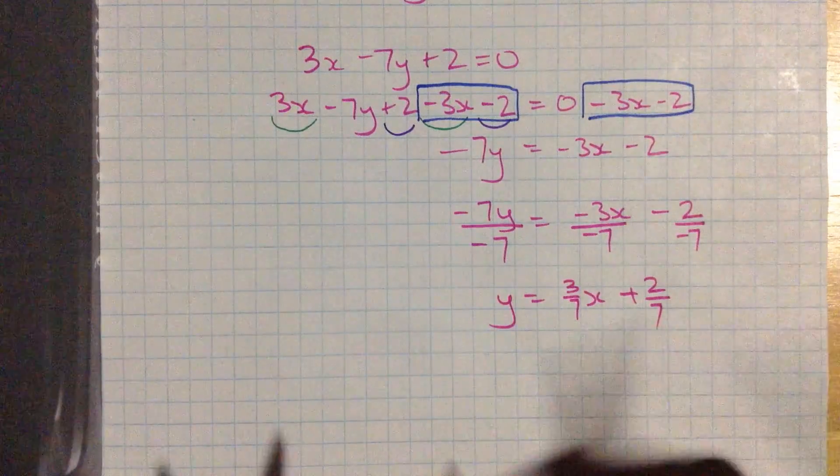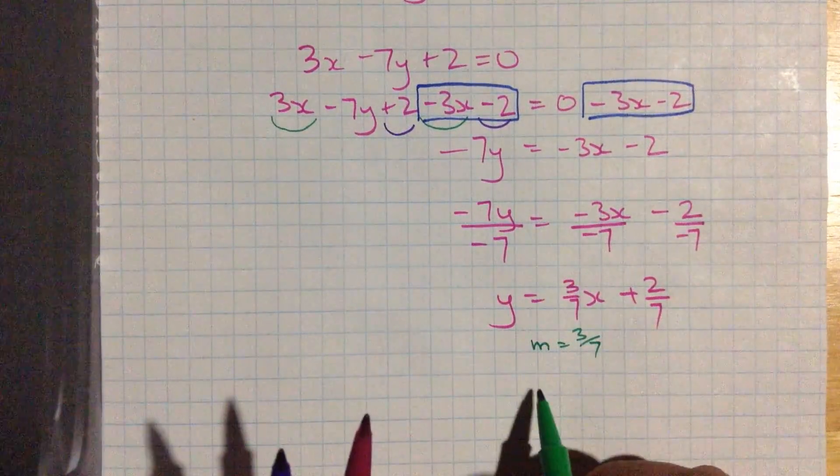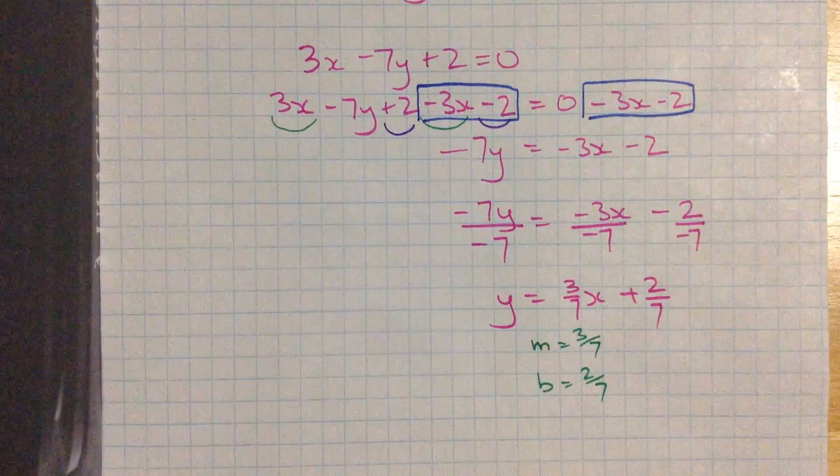Now I've got my slope y-intercept form. m is 3 7ths. That's the slope. And b is 2 7ths. That's the y-intercept.